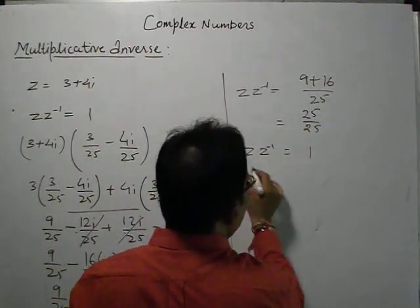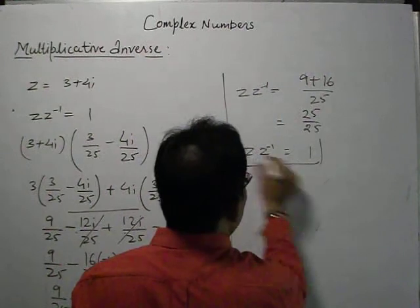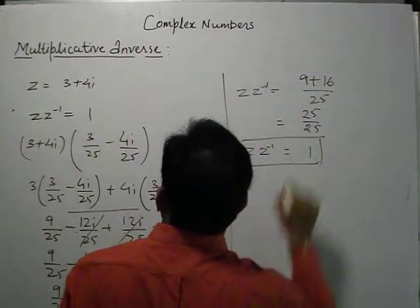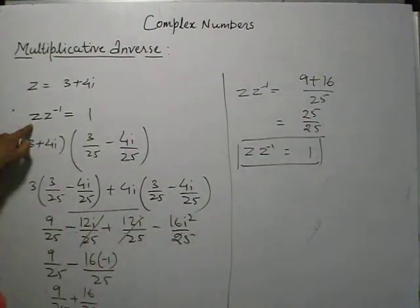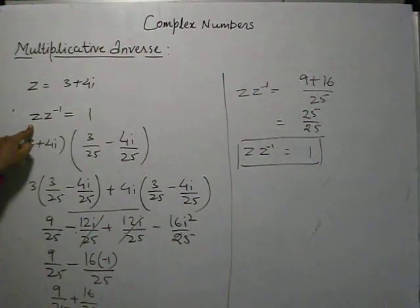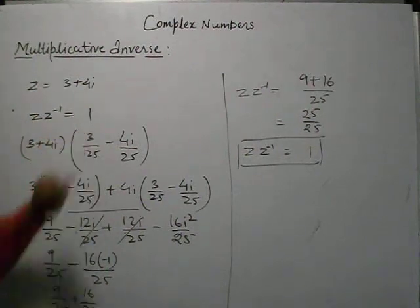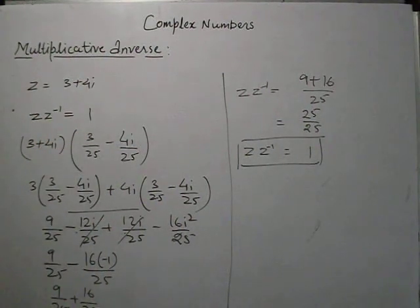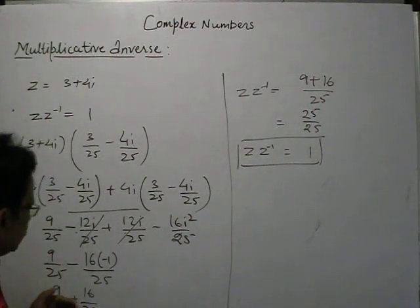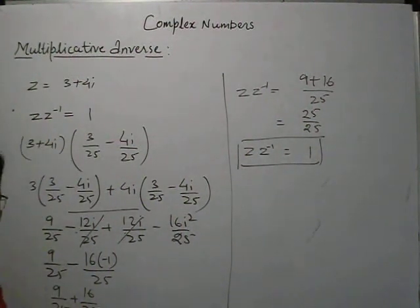So this confirms the theorem. Z times z inverse is equal to 1, so our multiplicative inverse was correct.